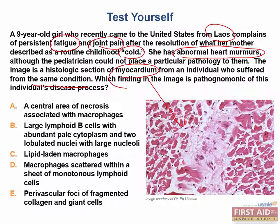You need to be very careful when you have a vignette that includes immigration from another country that may not have the same routine vaccination or healthcare screening processes as the United States. You automatically want to think about one of the viral exanthems due to lack of immunization therapy, or TB. But this question is trying to mislead you with that immigrant element. What is happening in this young Laotian girl is something that could happen in anyone in the United States that isn't properly treated with antibiotics following a group A beta-hemolytic streptococcal pharyngitis.